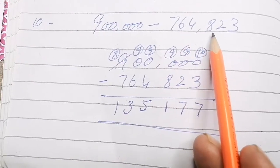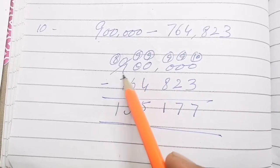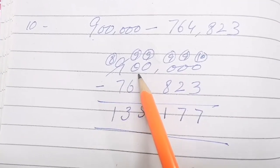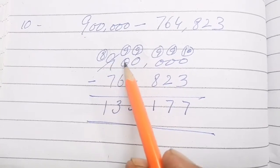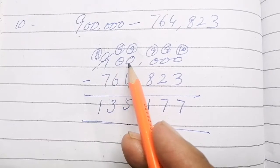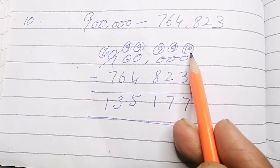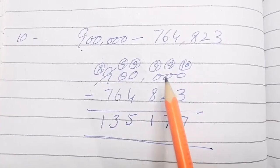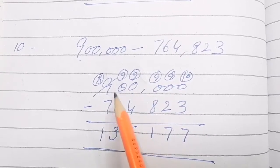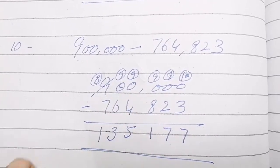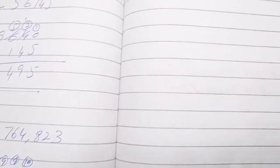Question number 10: 900000 minus 764xxx. Since all inner digits are zeros, we take carry from 9, leaving 8. Make it 10, take carry — 9 is left; the last 10 becomes 10. 10 minus 3 is 7, 9 minus 2 is 7, 9 minus 8 is 1, 9 minus 4 is 5, 9 minus 6 is 3, 8 minus 7 is 1. This is an important question — make sure you do it carefully.